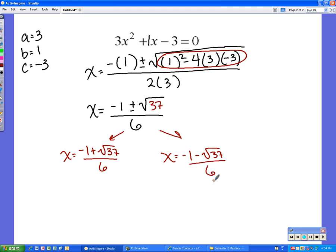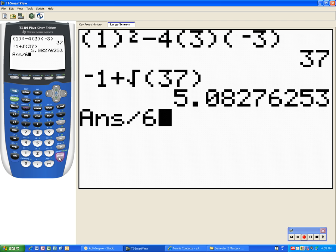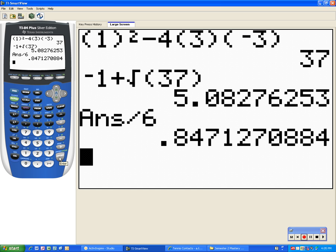So, to figure this out, I type in the top, press enter, and then divide that by 6. So, negative 1 plus the square root of 37, enter. Then, divide by 6. So, it looks like 0.847. So, I'm going to round that to 0.85 is my answer.